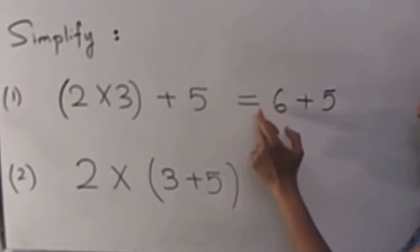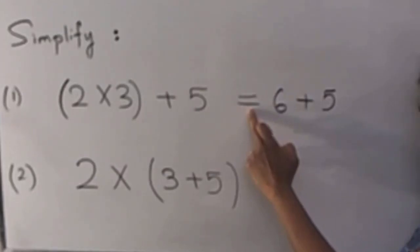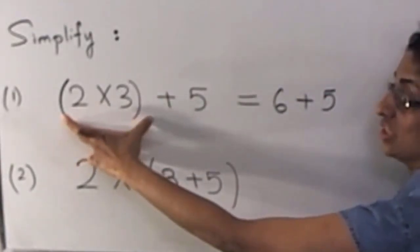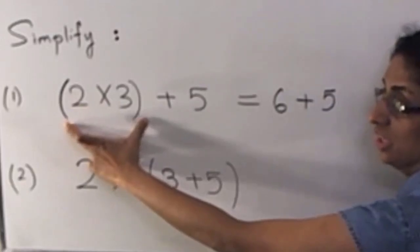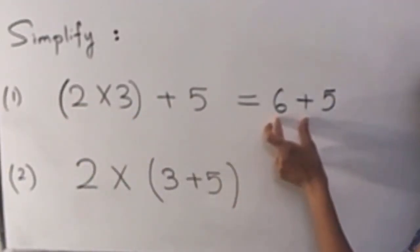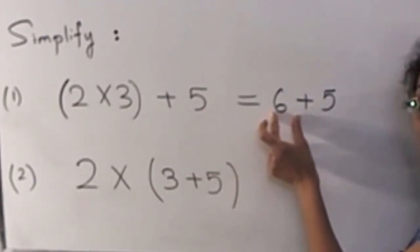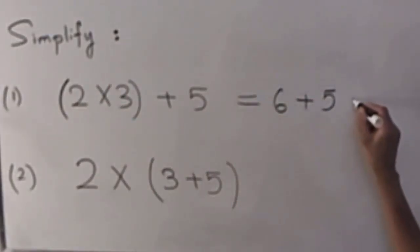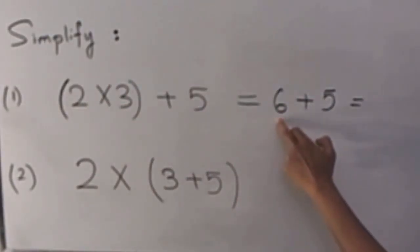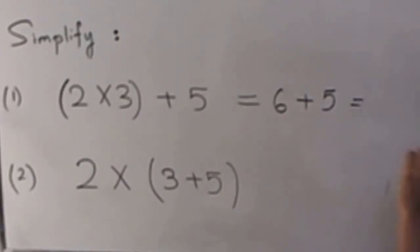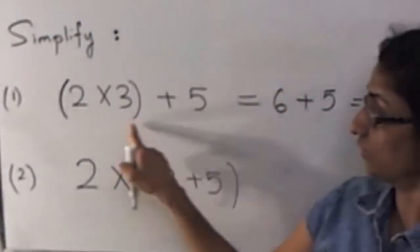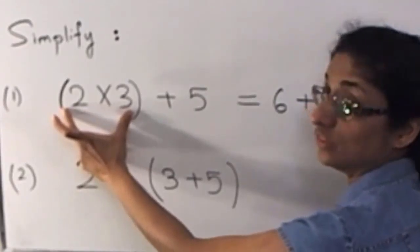Notice that this arithmetic expression and the new expression are exactly the same number — that is why we put an equality sign. This part of the expression is exactly 6, and that's what I've replaced it with. Now I carry out 6 plus 5, which gives me 11.